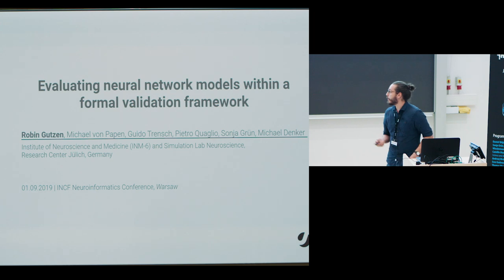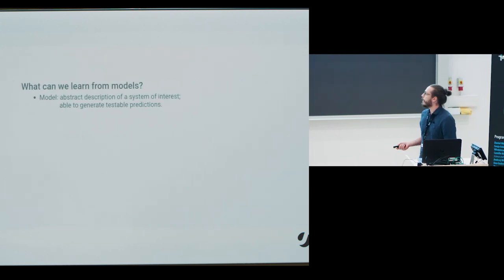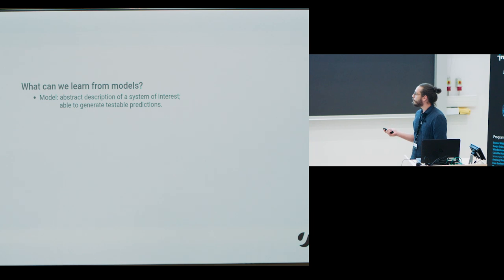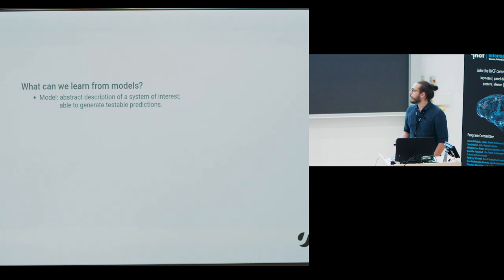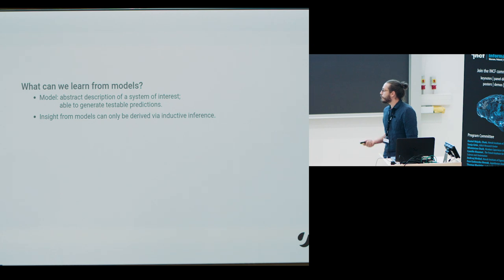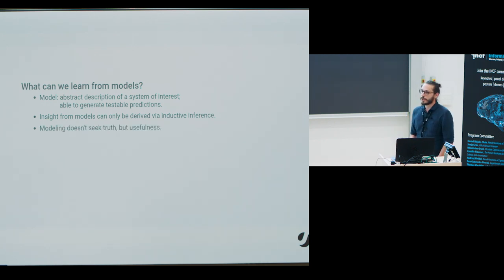I will start at the very beginning with models. What are they and how can we learn from them? Models are an abstract, simplified description of some system of interest and the key attribute is that they can generate testable predictions. When these models do this very accurately, we might want to infer our knowledge of the model to the system. This is called inductive inference and it's good scientific practice. However, this doesn't mean that we actually uncovered some truths about the system, it just means that we found a useful description.